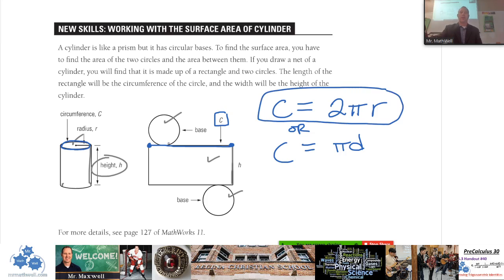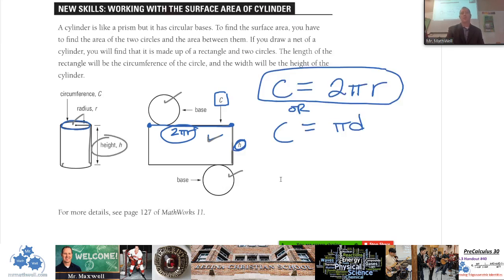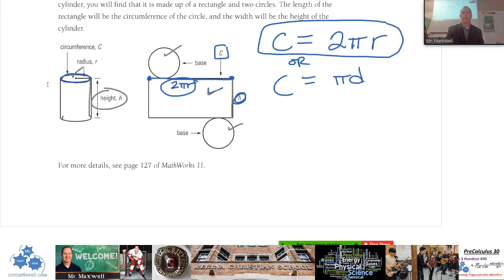So that's the length, and if we're going to find the area of this wraparound part, you're going to go 2πr times h. So 2πr times h, 2πrh, that's going to be the surface area of the wraparound part of a cylinder. So that's how you find the surface area of a cylinder. Let's do one quick example.